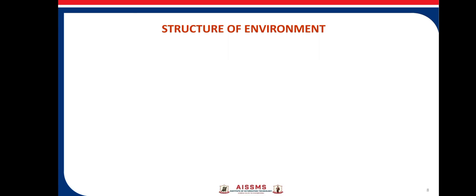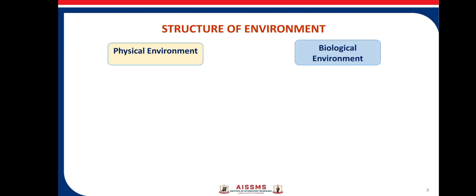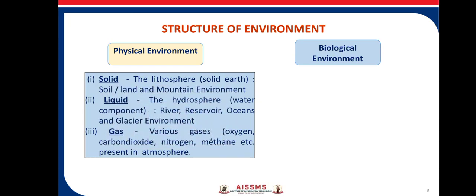Structure of environment includes physical environment and biological environment. Physical environment includes solid, liquid, and gases. Solid: lithosphere, soil, land and mountains. Liquid: hydrosphere, river reservoirs, oceans and glaciers. Gas: the physical environment contains various gases like oxygen, carbon dioxide, nitrogen, methane, etc., present in the atmosphere.